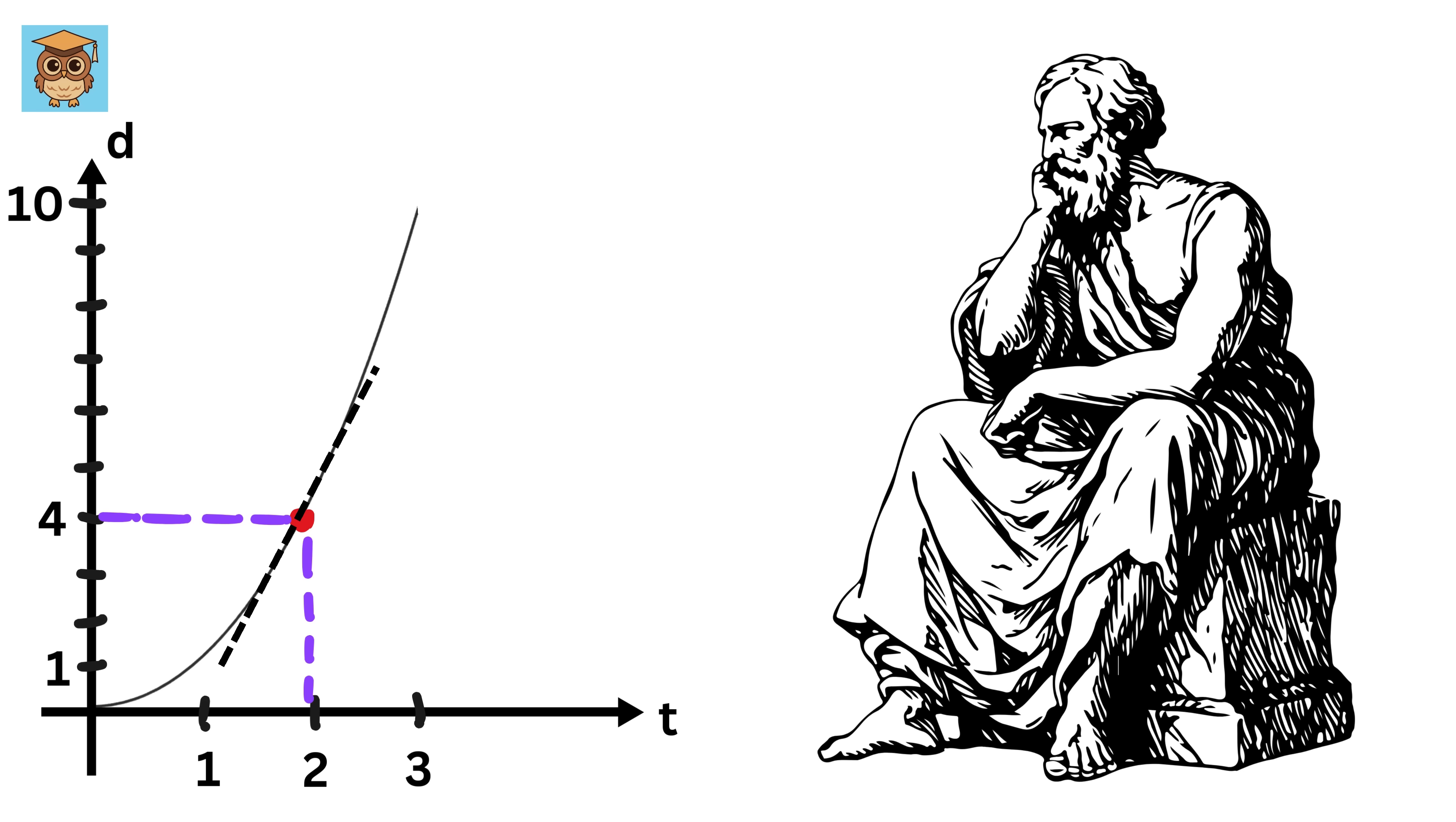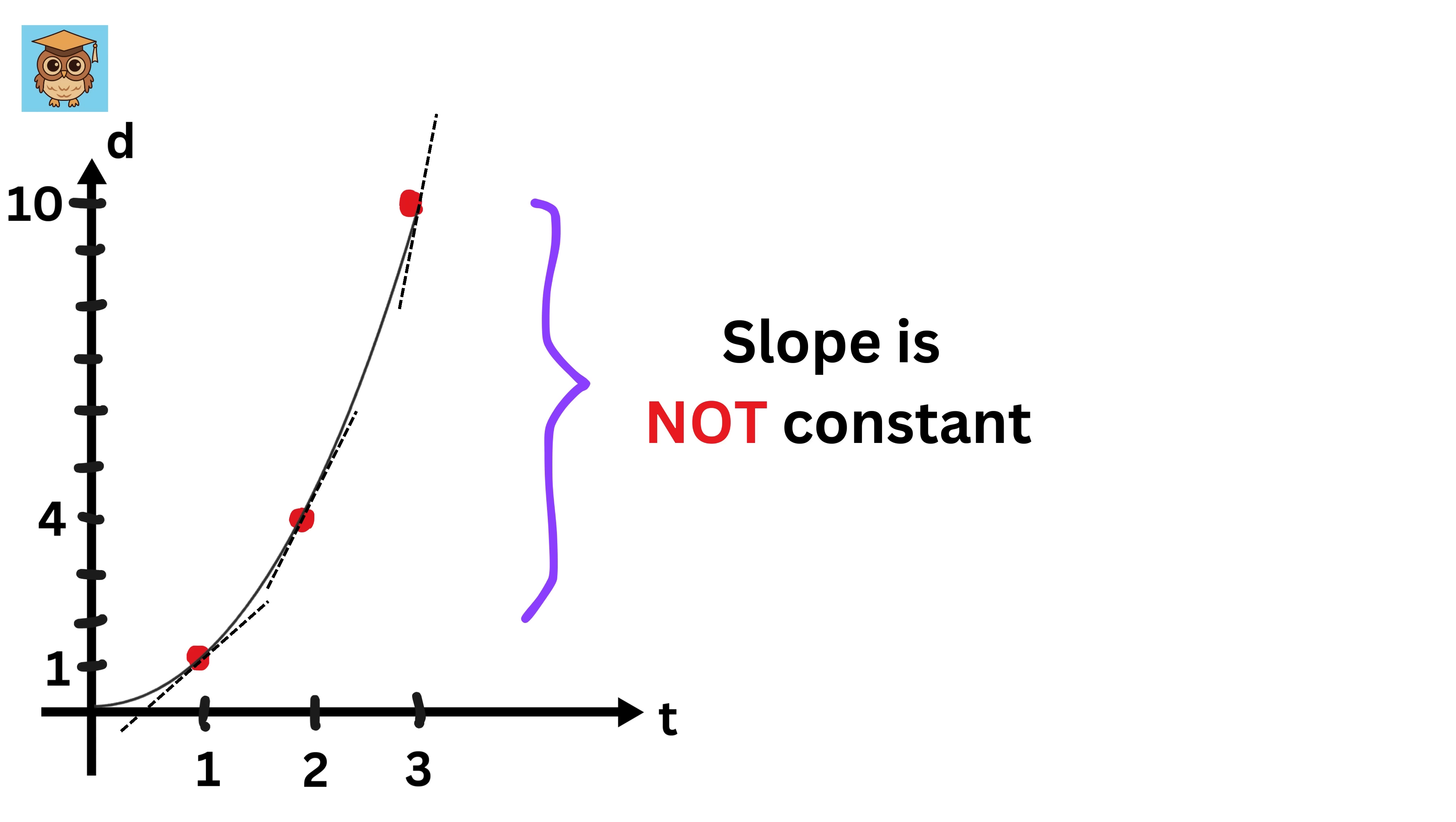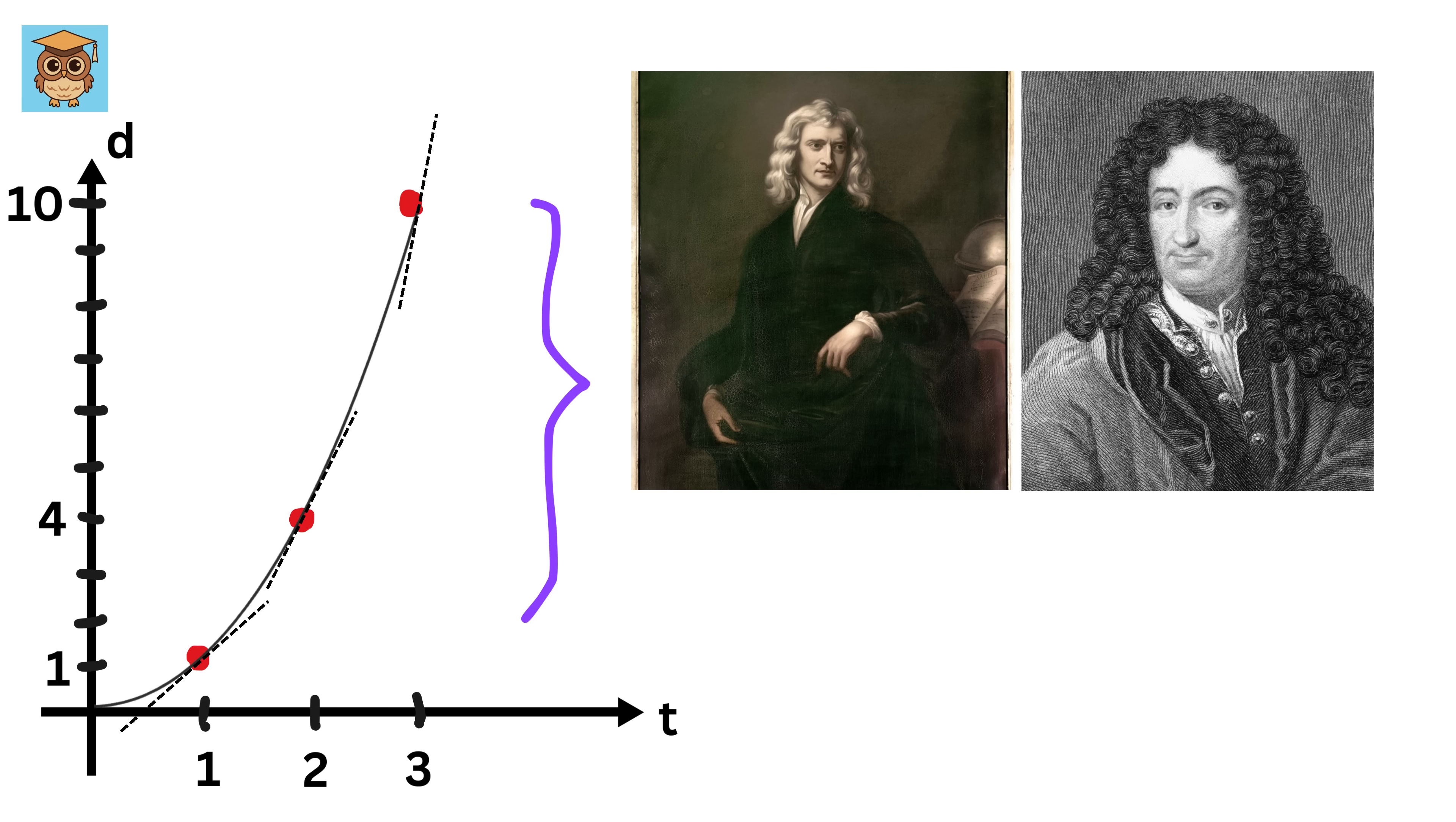Back in the 1600s, this was a huge problem. The slope wasn't constant anymore. People could draw the curve, but they had no idea how to calculate the slope at any specific point on it.